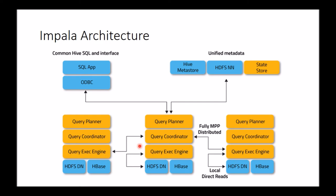It splits out tasks to different execution engines based on factors like data locality and cost-based optimizations to determine which node is best suited to run each part of the query. Once execution is done, results are streamed back to the coordinator, which streams them back to the client application. This pattern represents the massively parallel distributed execution model — that's Impala at a very high level.